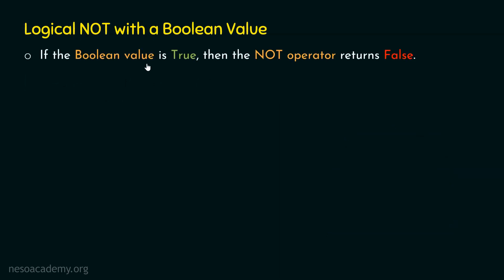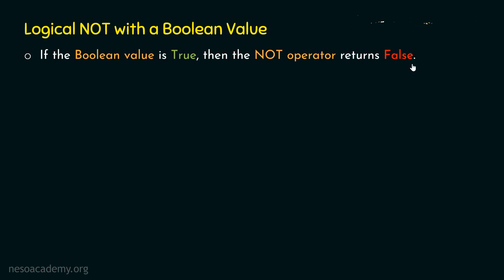If the boolean value is true, then the not operator returns false. If the boolean value is true, then the not operator returns false. Otherwise, the not operator returns true. So, not of true is false and not of false is true. In order to see this in action, let's consider one simple example.